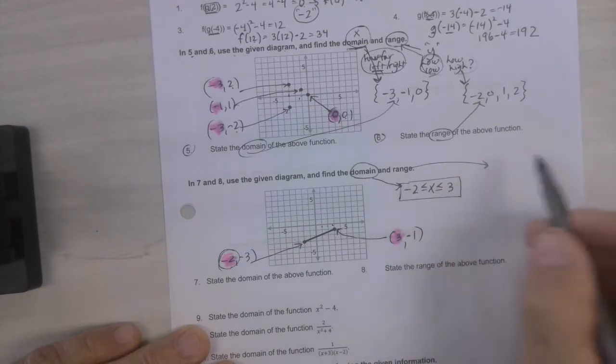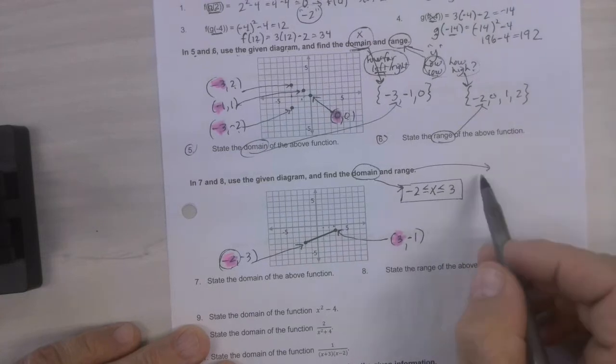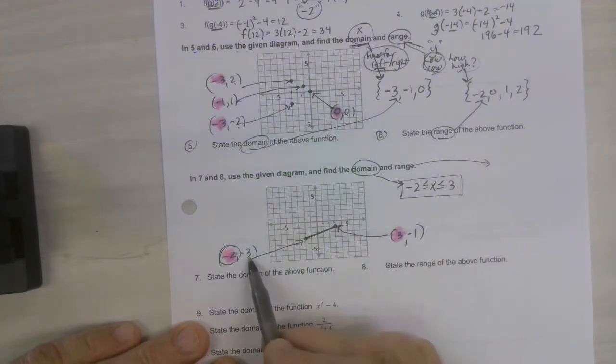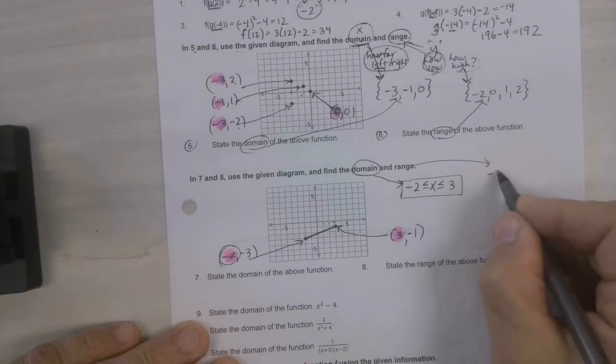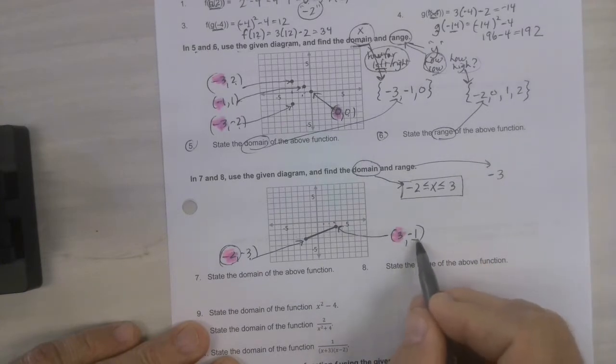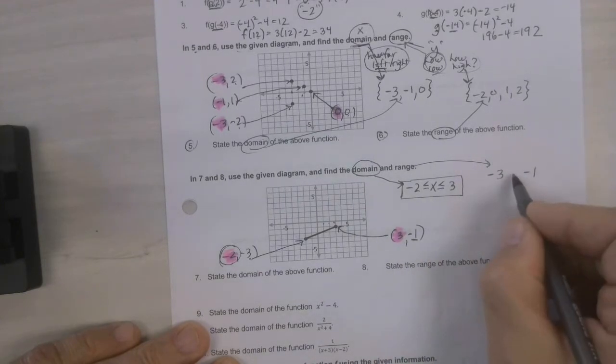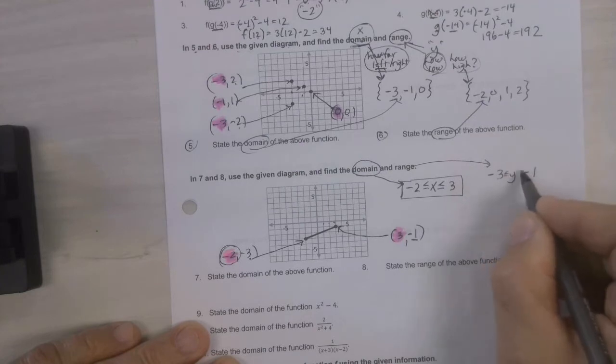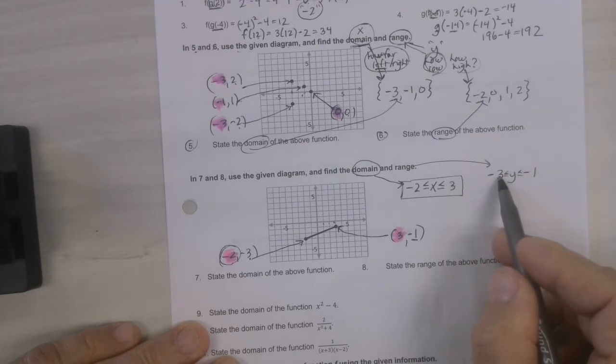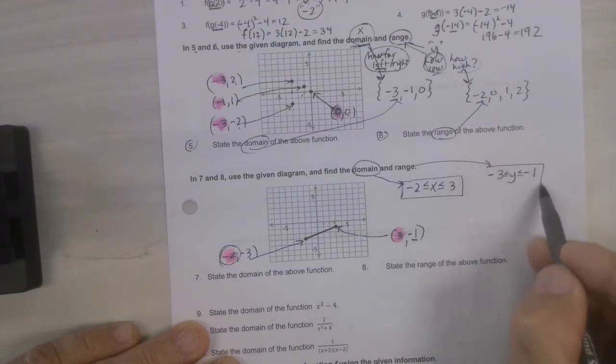What about our range? Well, how low does it go? The lowest point is negative 3. So, we're going to put that on the far left. The highest point is negative 1. And y is sandwiched in between negative 3 and negative 1. And that's how we write our answer.